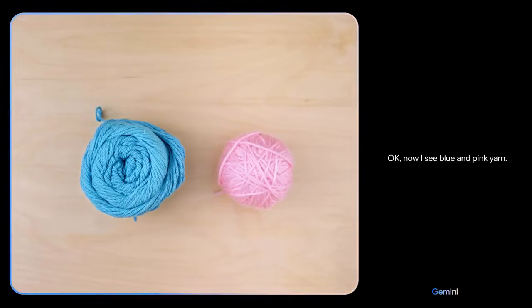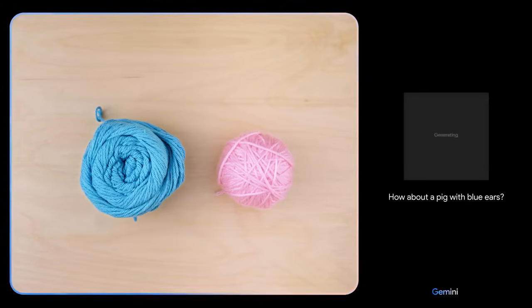Okay, how about these colors? And maybe show me some animals. Okay, now I see blue and pink yarn. How about a pig with blue ears, or an octopus, or a bunny with a pink nose?